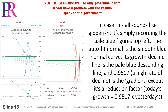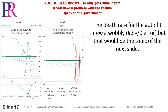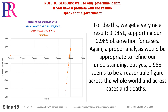These were auto-fit data, which is generally reasonable, but we're not going to court with it. It's not a bad figure and gives us a statistical sense consistent with what we saw looking through the charts one by one. Recording the pale blue figures top-left: the auto-fit normal is the smooth blue curve, its growth decline line is the pale blue descending line, and 0.9517 — a high rate of decline — is the gradient, or rather a reduction factor: today's growth equals 0.9517 times yesterday's.